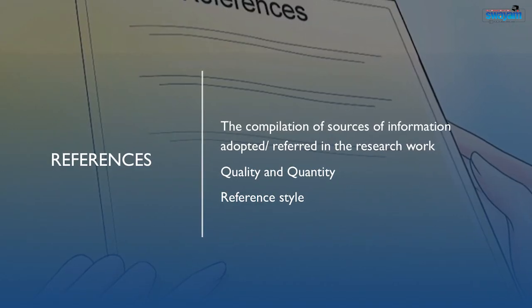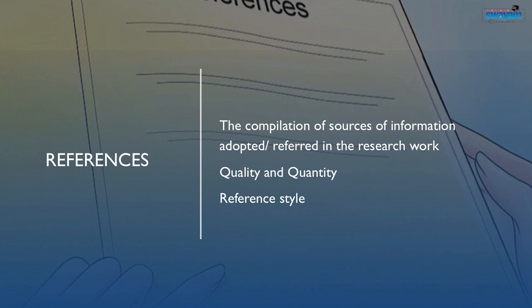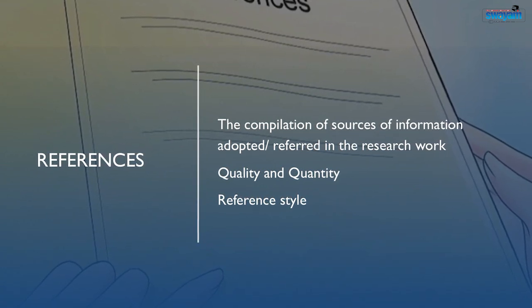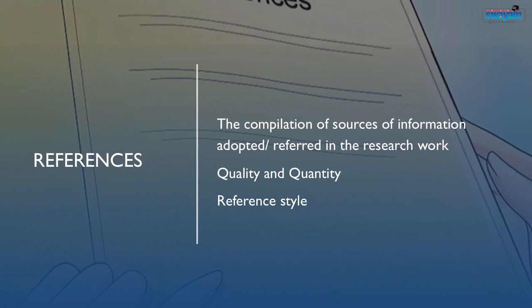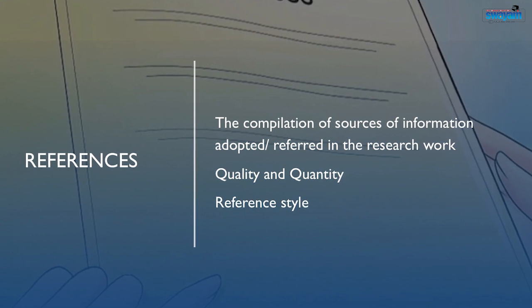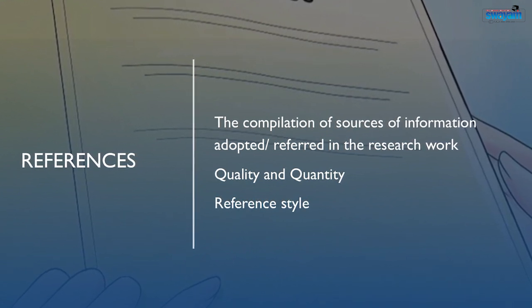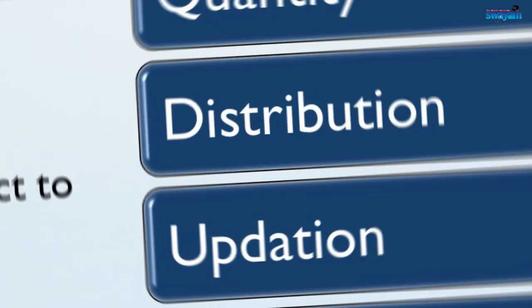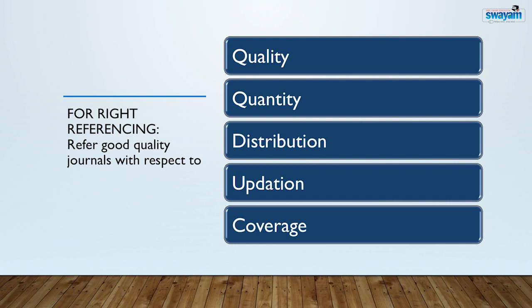Moving to the references. References are the compilation of sources of information which you have adopted or which you have referred in your research work. The quality and quantity of references must be ensured for your research article. You must practice writing in particular style, observe it and practice it. Refer good quality journals with respect to quality, quantity, distribution, updation, coverage, and then it will have a good mix of references.